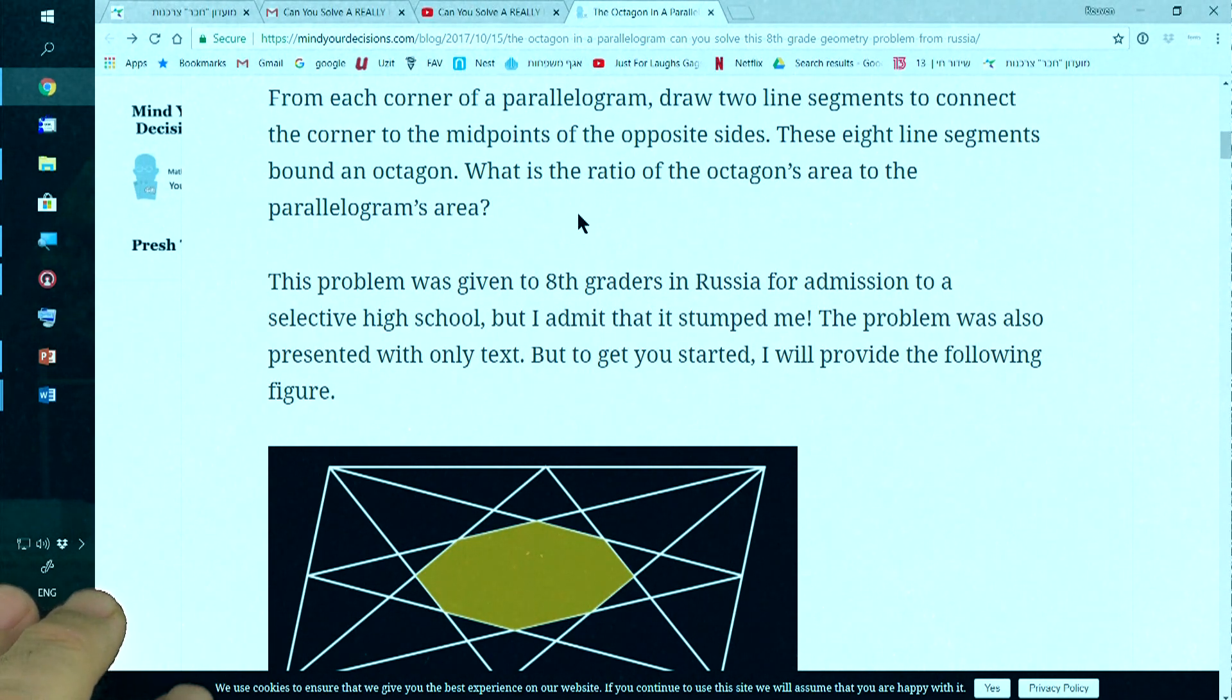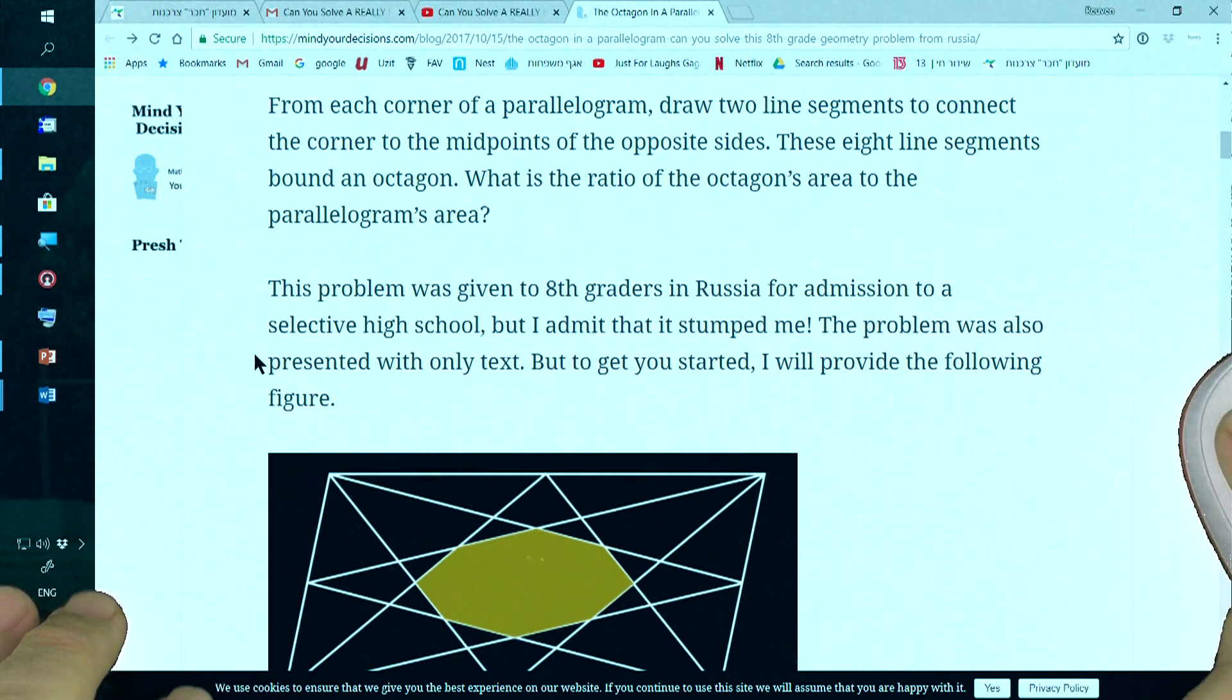So you have here eight line segments, and they bound an octagon, and we would like to know what is the ratio of this octagon area to the parallelogram area.